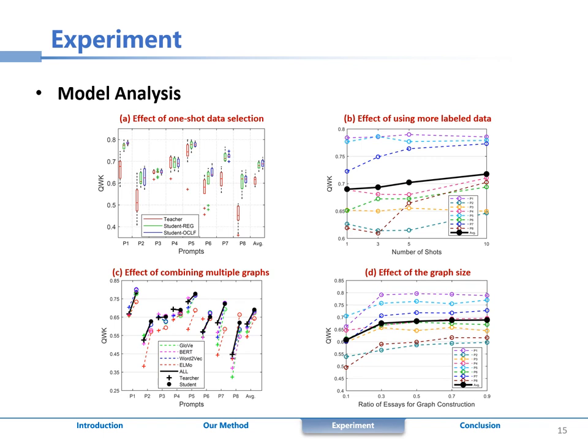This indicates that combining multiple graphs for label guessing is an effective way to provide student labels with stable quality and thus improve the performance of the student model.